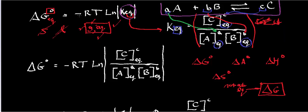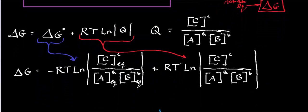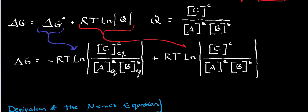Delta G at equilibrium equals negative R times T (in Kelvin) times the natural log of KEQ. However, it's often not useful to know only the delta G at equilibrium, because very few reactions are at equilibrium — especially in biological systems. If you're doing mass production and you're at equilibrium, your production has stopped, so you want to force things toward the products.